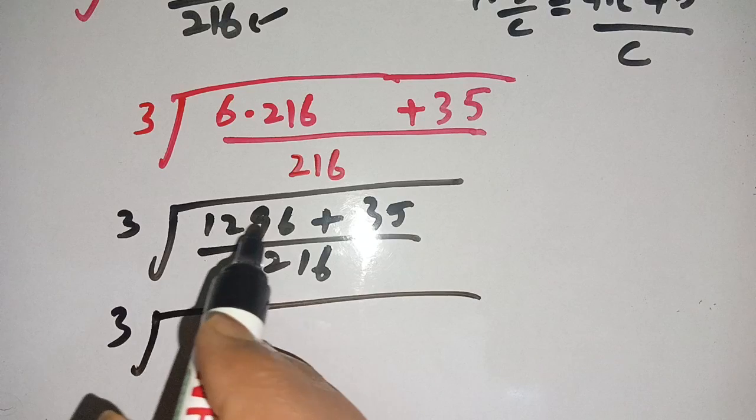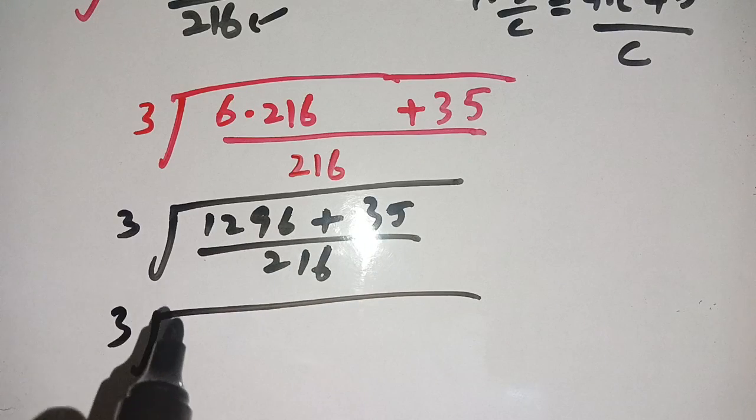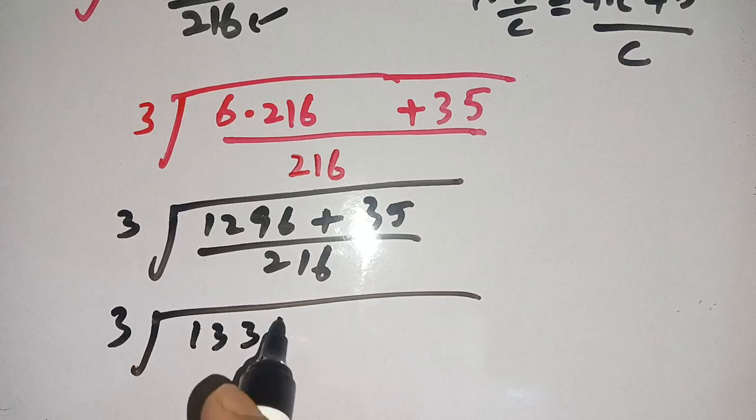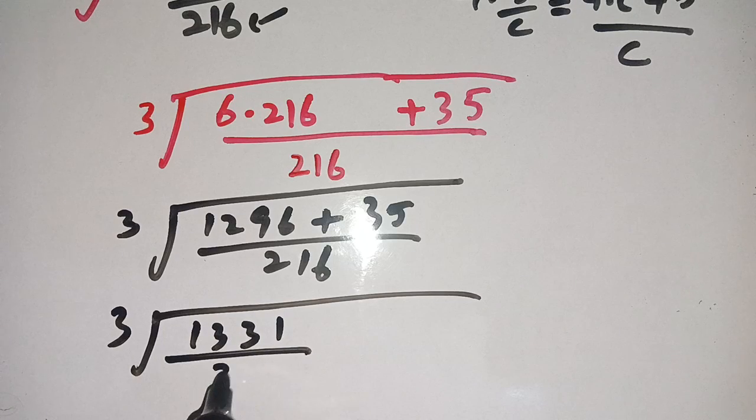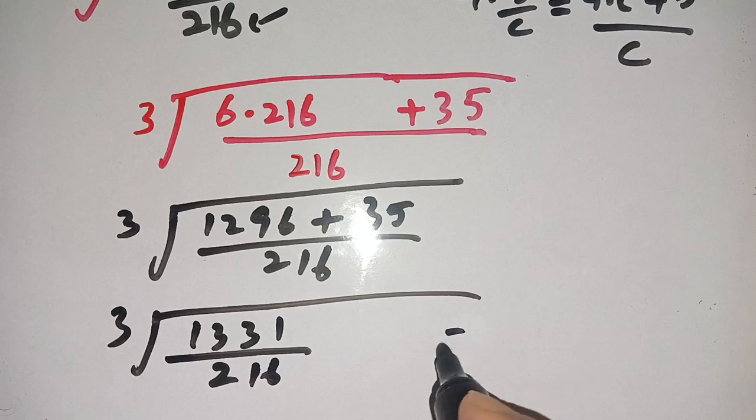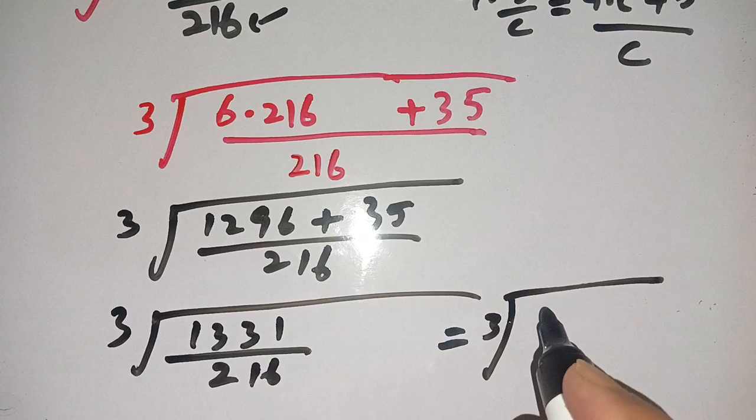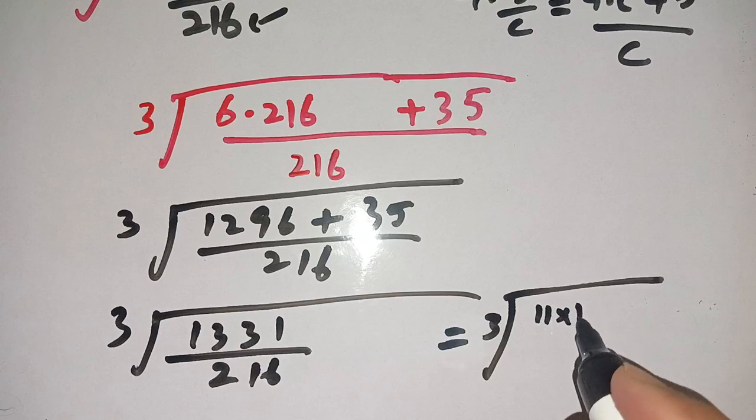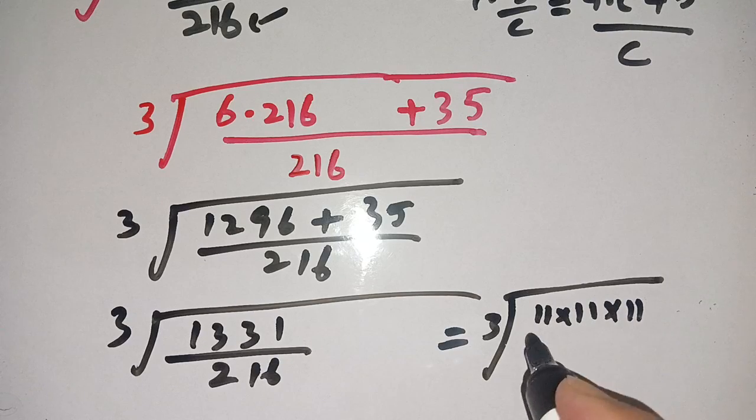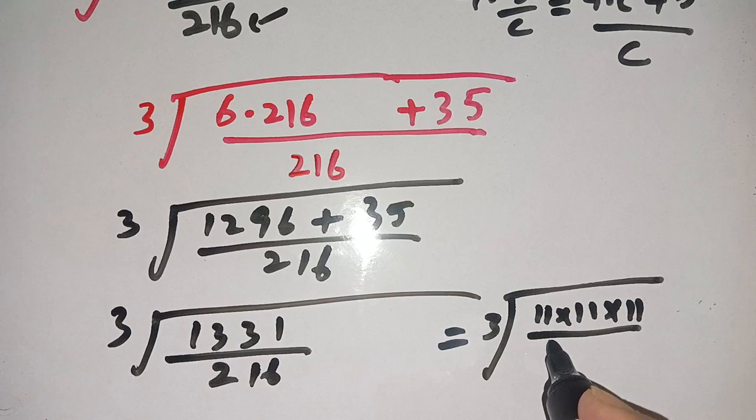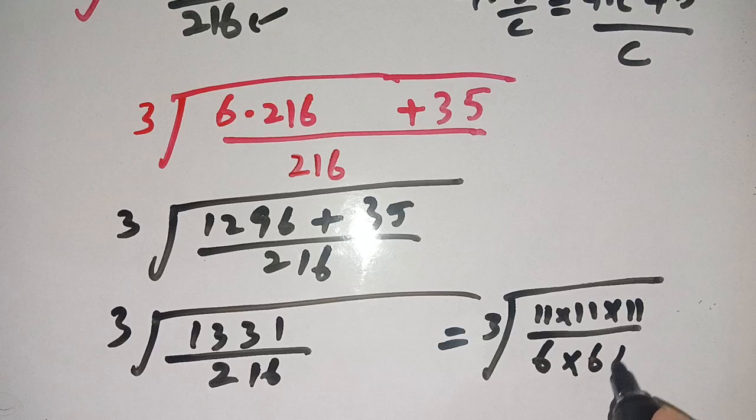It is equal to cube root of 1331, which can be written as 11 times 11 times 11, divided by 216, which can be written as 6 times 6 times 6.